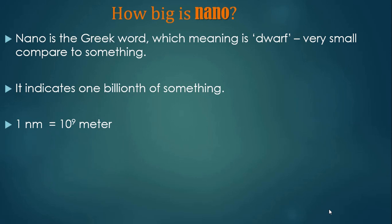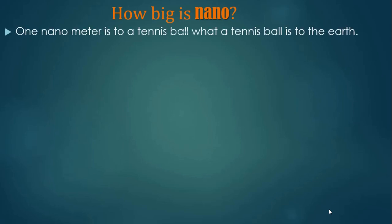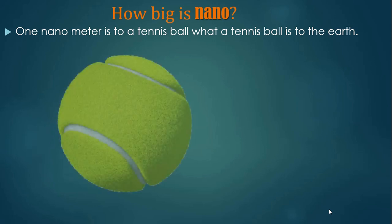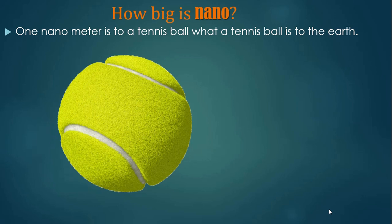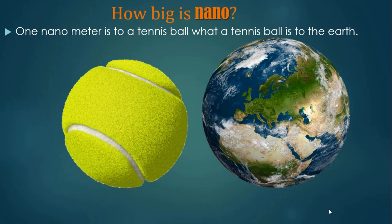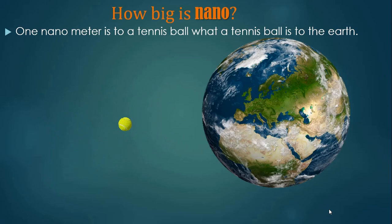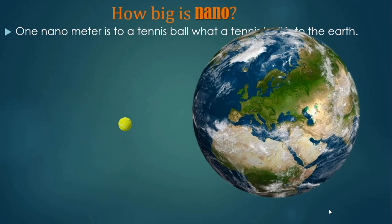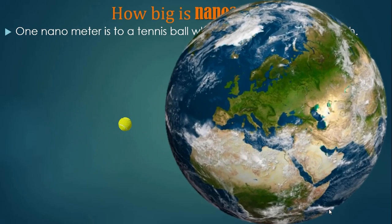Let's understand nanometer size with one interesting example. If we consider 1 nanometer to be the size of a tennis ball, then the size of an actual tennis ball would be like the Earth. So this is the difference between the 1-nanometer scale and the size of a tennis ball — that is the nano scale.